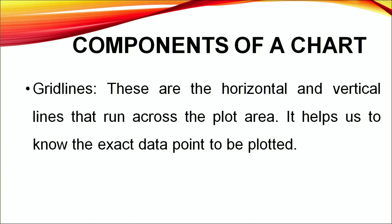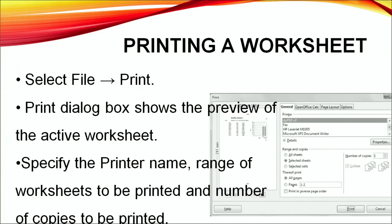For printing a worksheet, go to the File menu and select Print. The Print dialog box shows a preview of the active worksheet. Specify the printer name, the range of the worksheet to be printed, and the number of copies. If you want to print only a chart, choose the Selected Sheet option and make sure the chart is selected on the worksheet. Click the Print button to print.